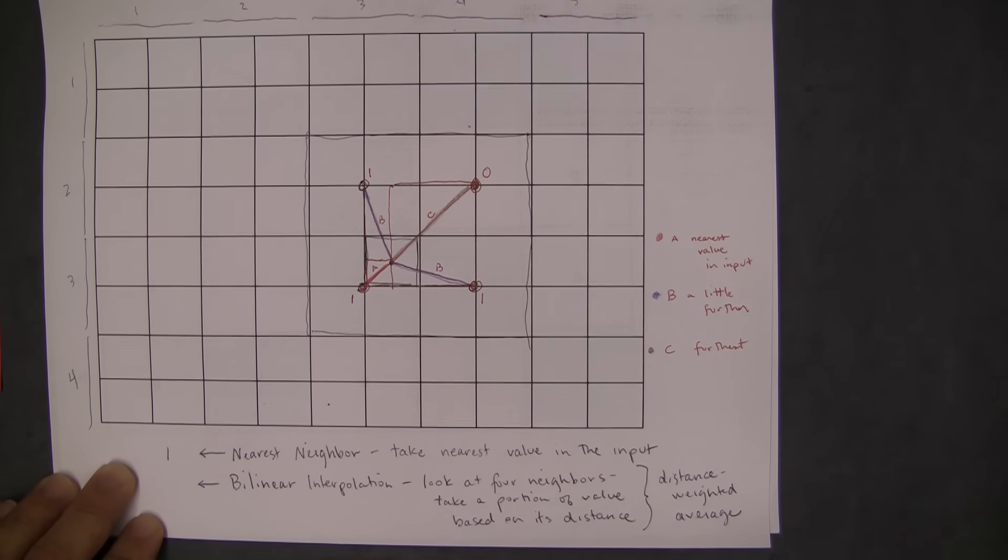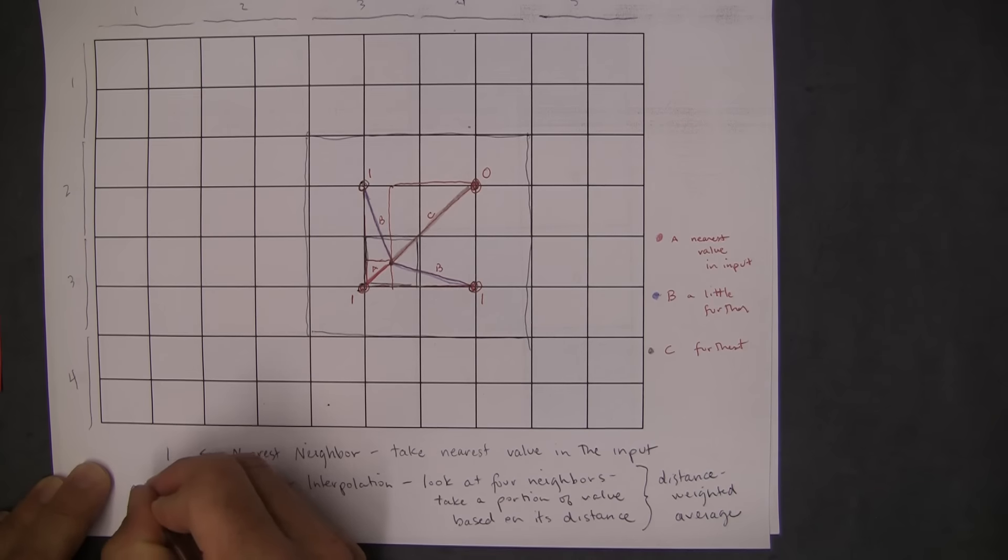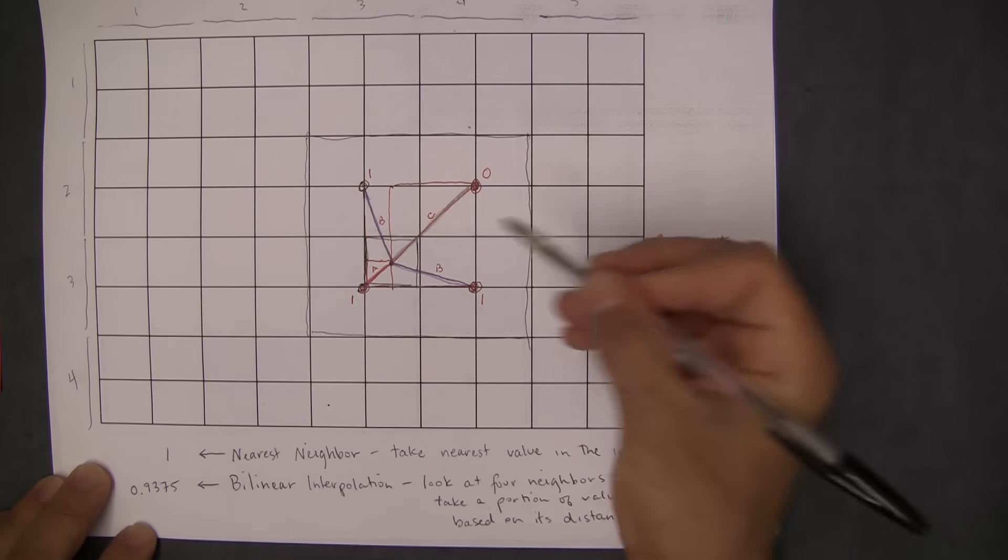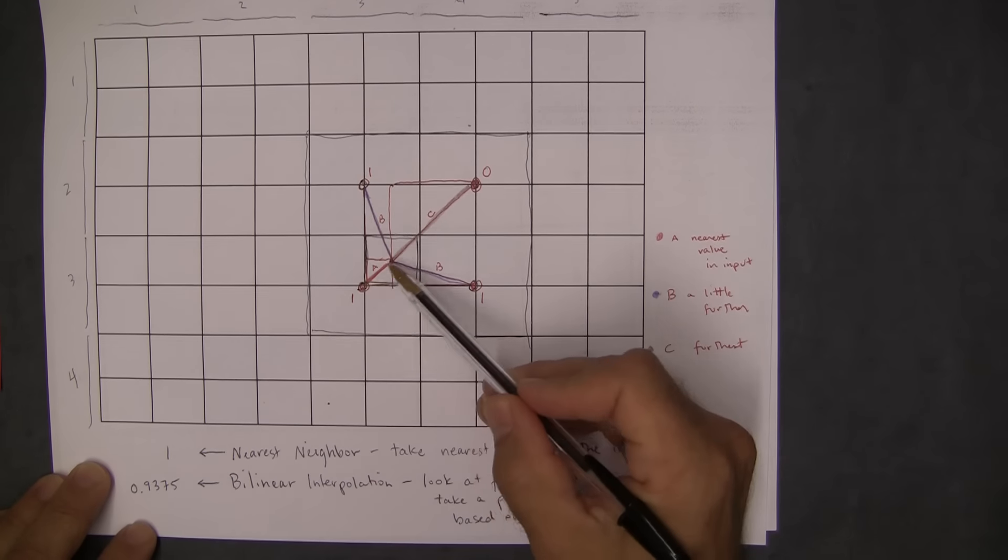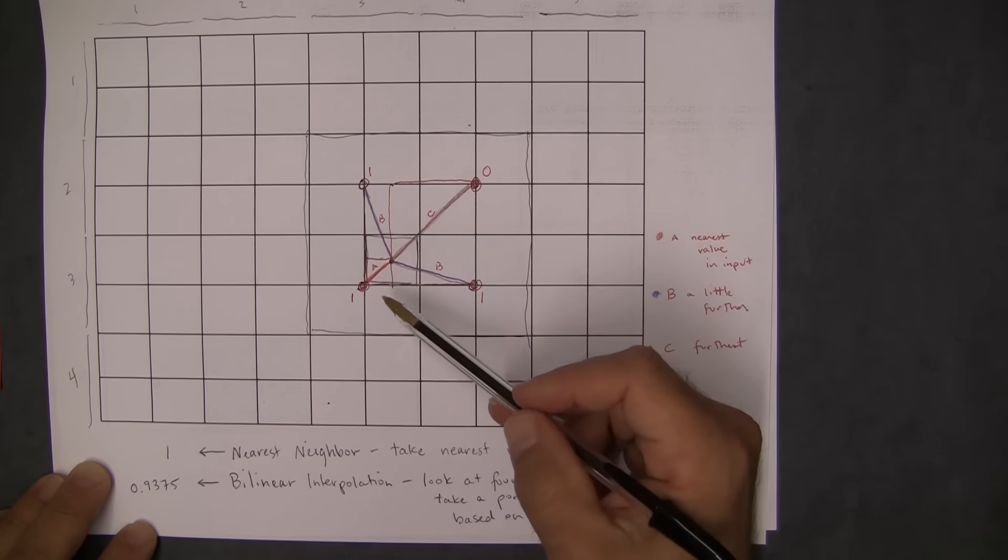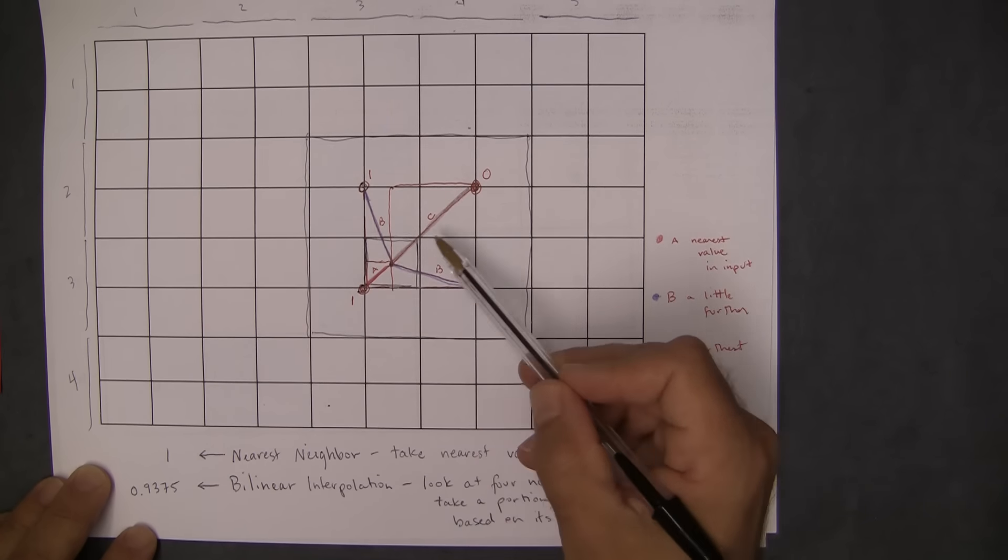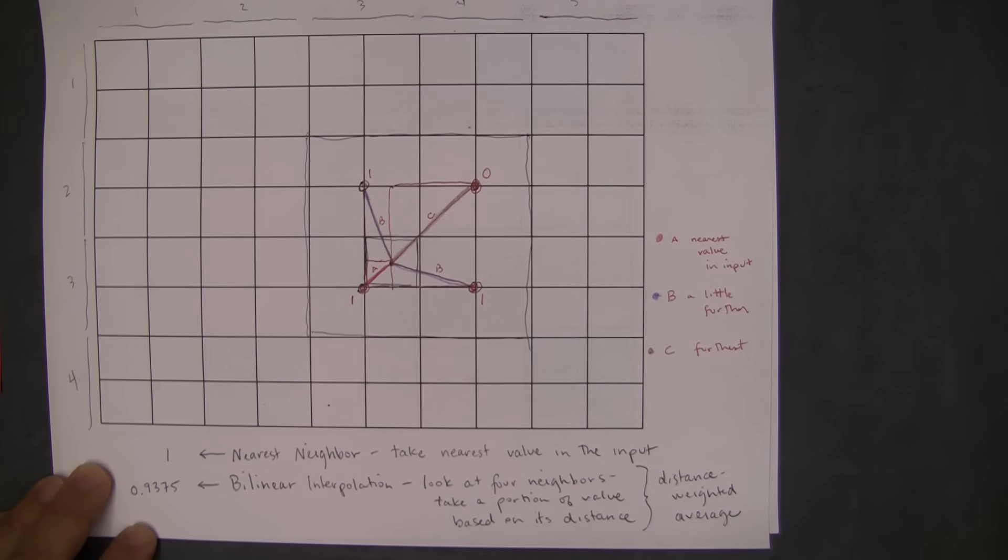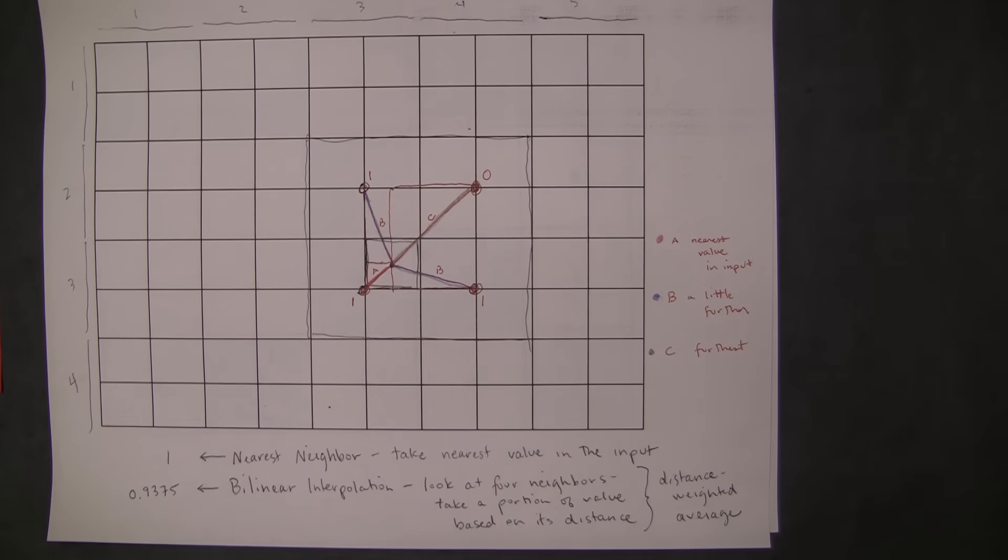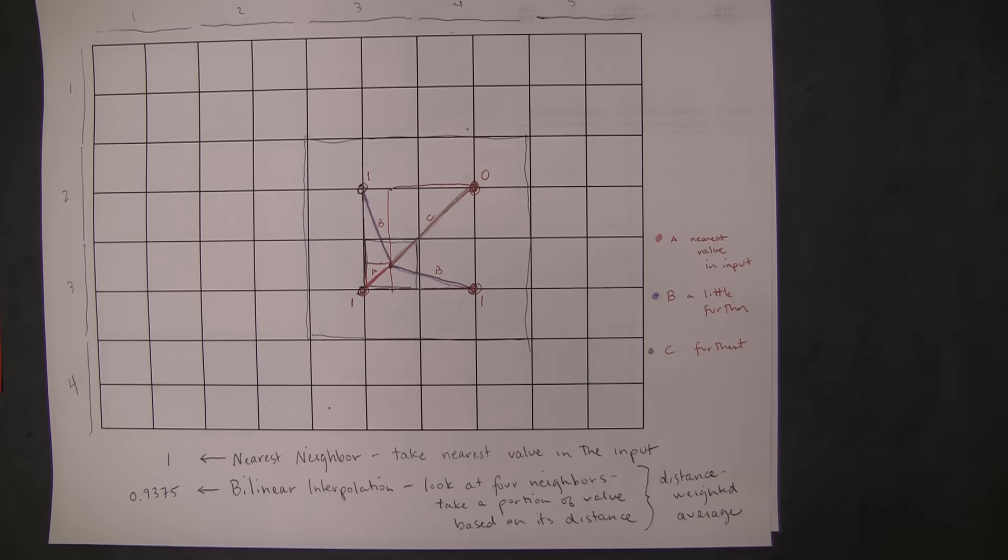So in this case, I think the answer would be 0.9375 is what we'd wind up putting here, because we're going to take, you know, most of what we, we're going to take an average, but rather than just dividing by 4, we're going to weigh the amount that we take based on the distance. So I think that's, I'm going to stop here and then show you some examples of this.